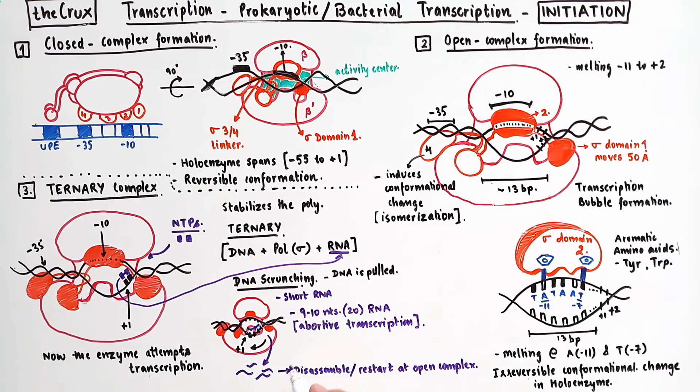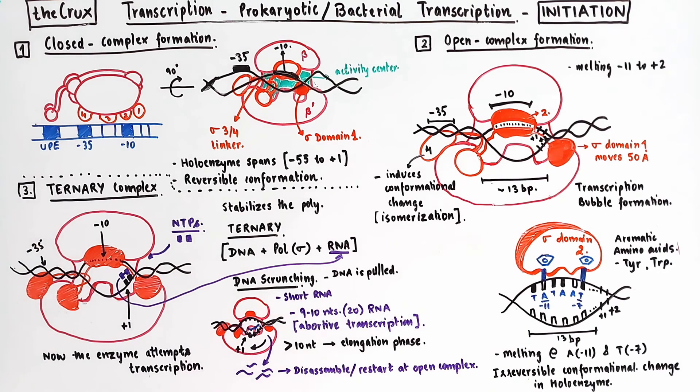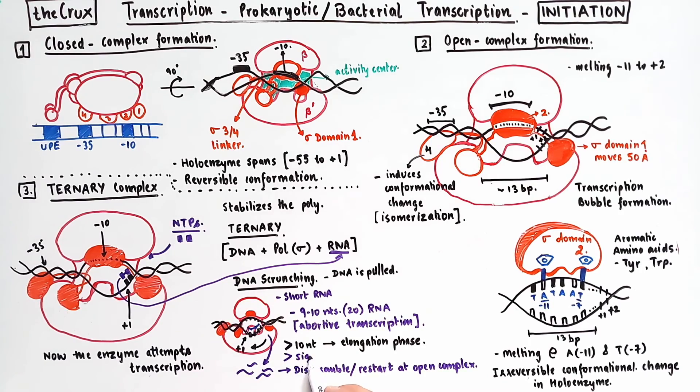More commonly however, if the enzyme makes an RNA longer than 10 nucleotides, it successfully proceeds to the next phase, which is the elongation phase. And that is the second step of the transcription process. Now following the escape of enzyme from the promoter DNA, the sigma factor usually is released from the holoenzyme. But some recent single molecule imaging studies have revealed that sigma factor can remain associated even in the elongation phase.